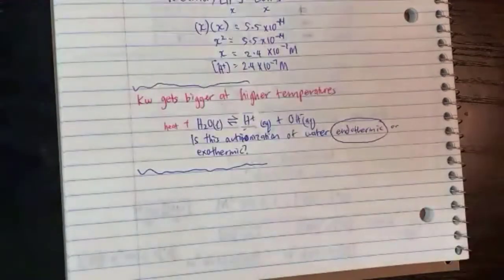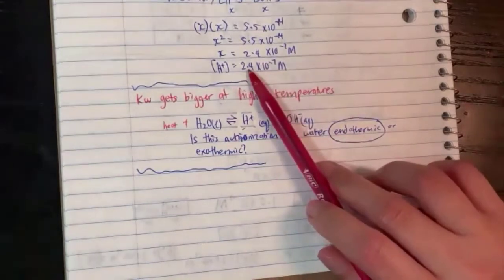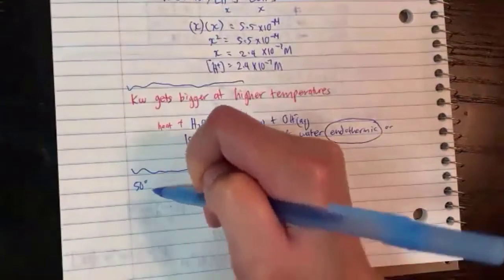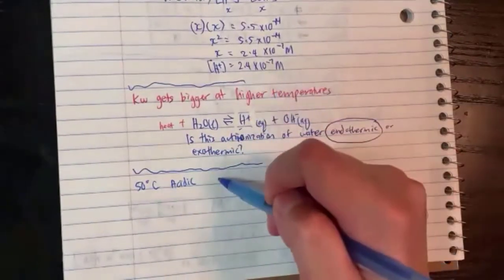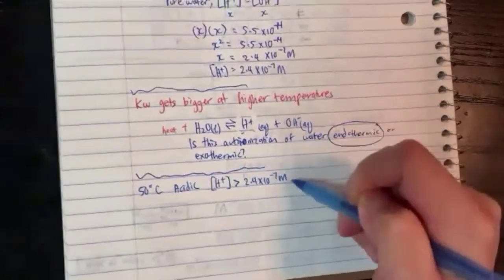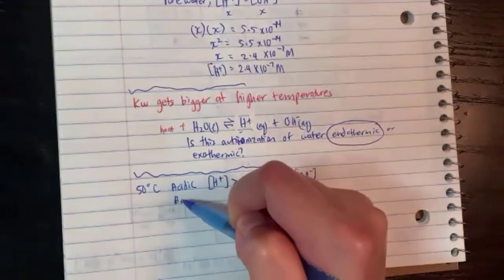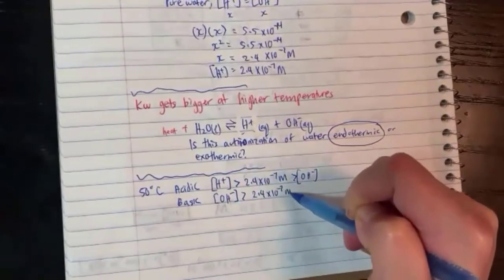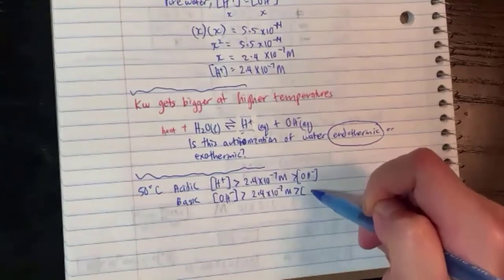We were talking about 50 degrees and pure water. So let's talk about acidic and basic for 50 degrees. The pure water midline is 2.4×10⁻⁷. For acidic at 50 degrees, hydrogen concentration is going to be bigger than 2.4×10⁻⁷, and hydroxide will be smaller than that. For a basic condition at 50 degrees, hydroxide is the bigger one. This number depends on what temperature it is. You find the pure water number first, and then you know acidic and basic are higher and lower than that value.